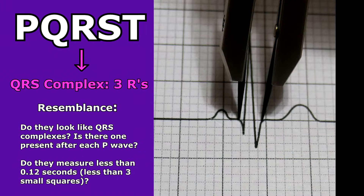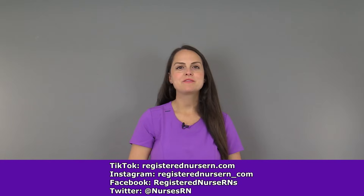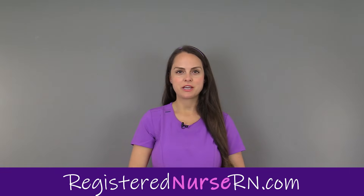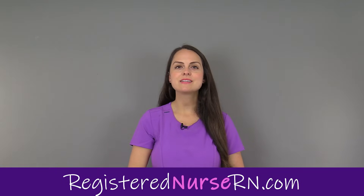And lastly, resemblance. How do they look? Do they look like QRS complexes? Is there one present after each P wave? They should not measure more than 0.12 seconds — so less than three boxes. So that wraps up this video. If you'd like to watch more videos on ECG interpretation, you can access the link in the YouTube description below.